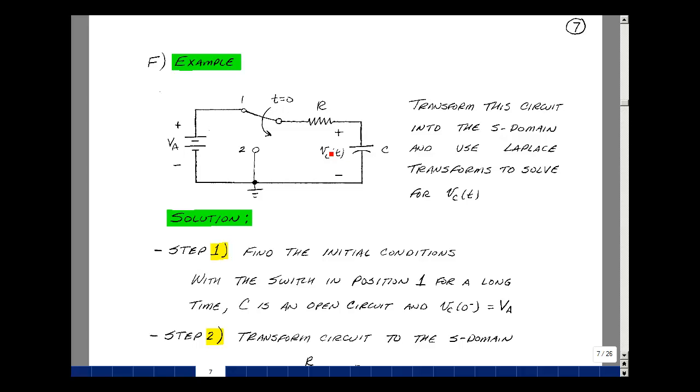The first step is to find the initial conditions. Now, with the switch in this position for a long time, we've got a DC circuit, and the capacitor will look like an open circuit in steady state. So we've got no current flowing, and so the voltage across the resistor is equal to zero, and so the capacitor voltage is the same as the battery voltage, v sub a.